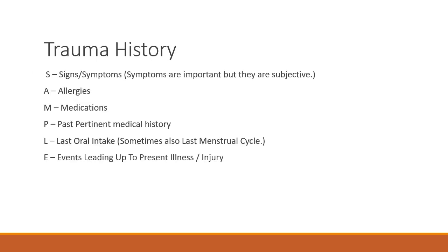In a trauma patient, you take a short history that is direct and pertinent to your management plan, using the SAMPLE history. S stands for signs and symptoms the patient presents with; A for allergies; M for medications being taken; P for pertinent past medical or surgical history; L for last oral intake — important when considering emergent surgery; and E for events leading up to the injury.